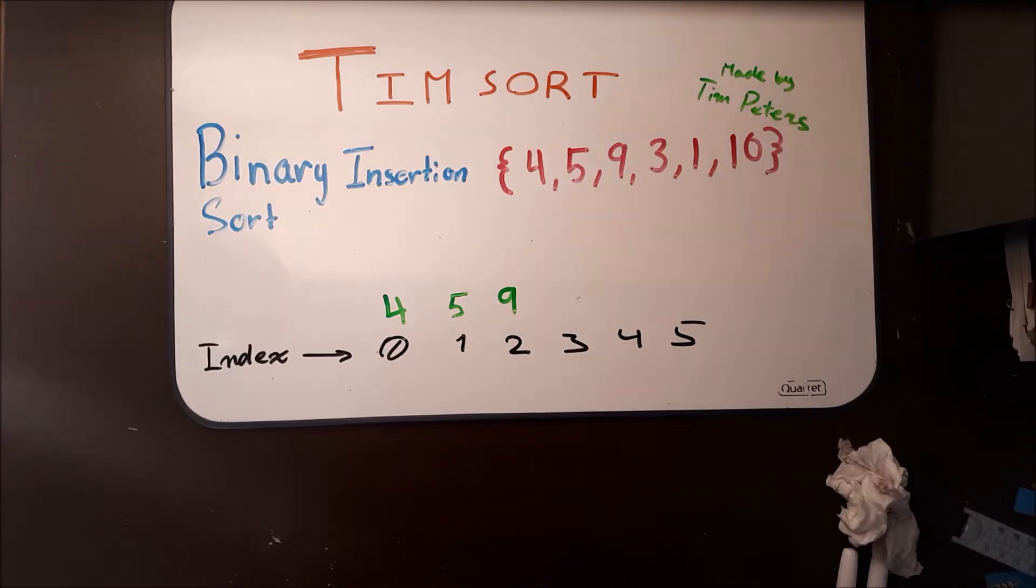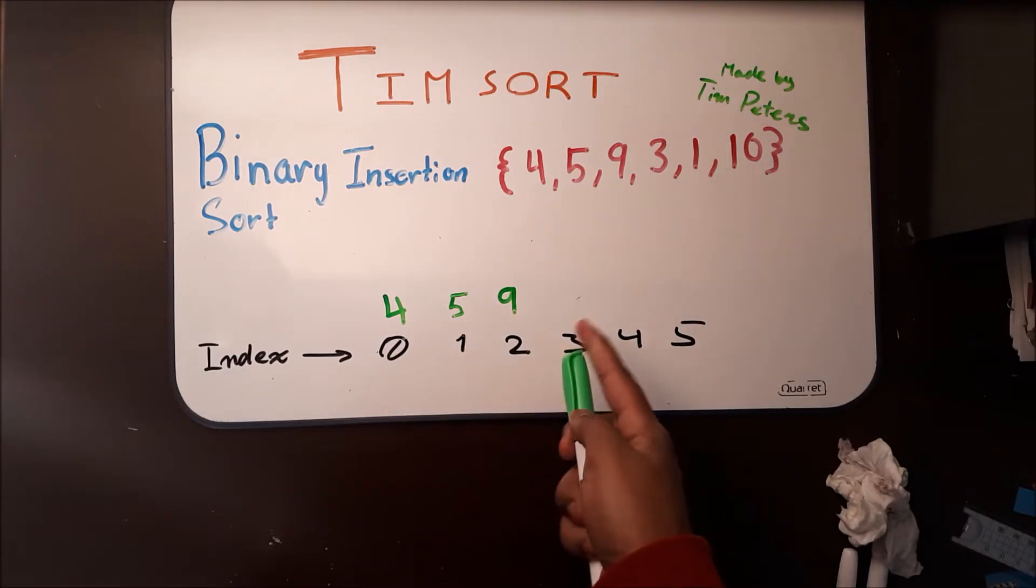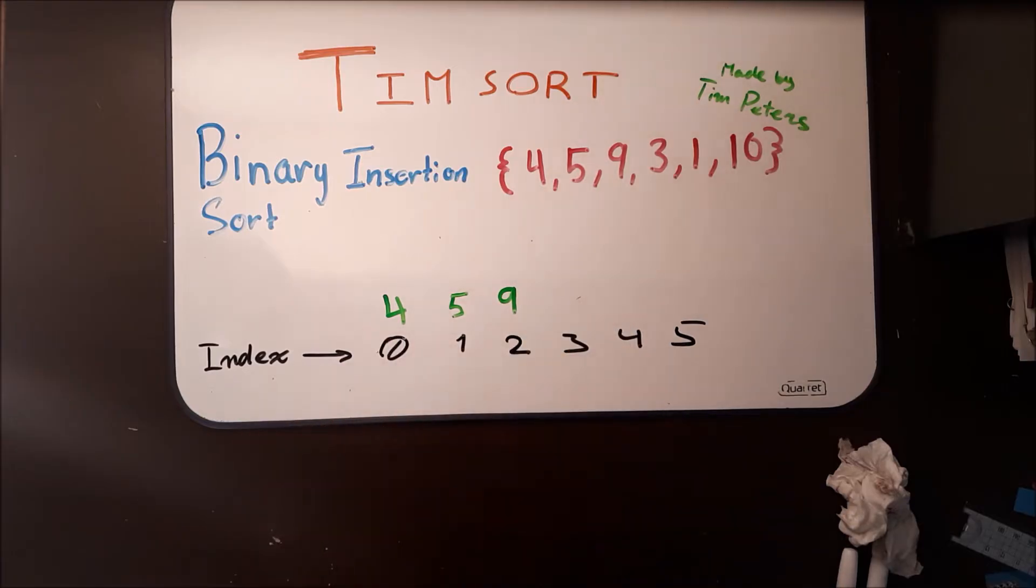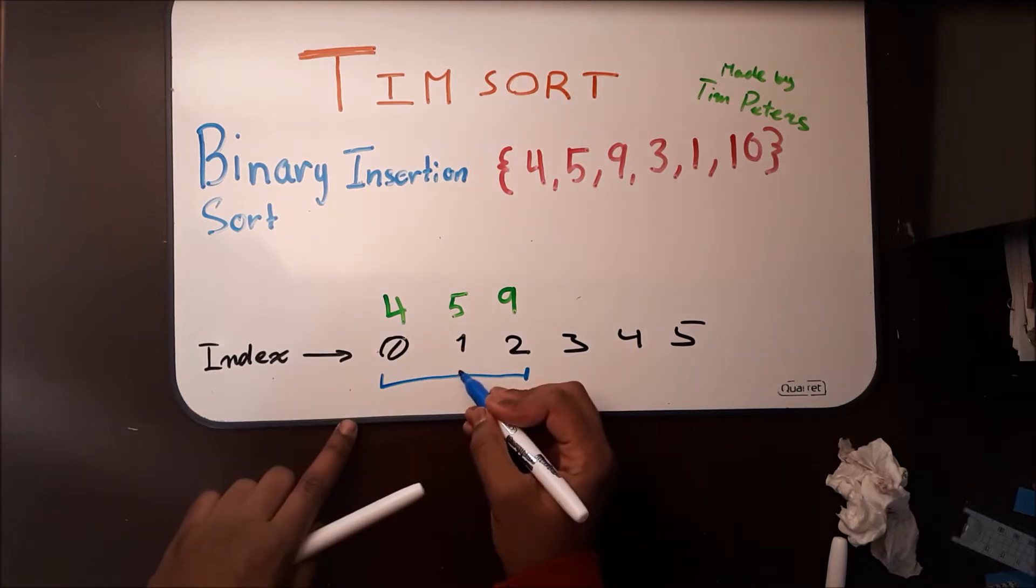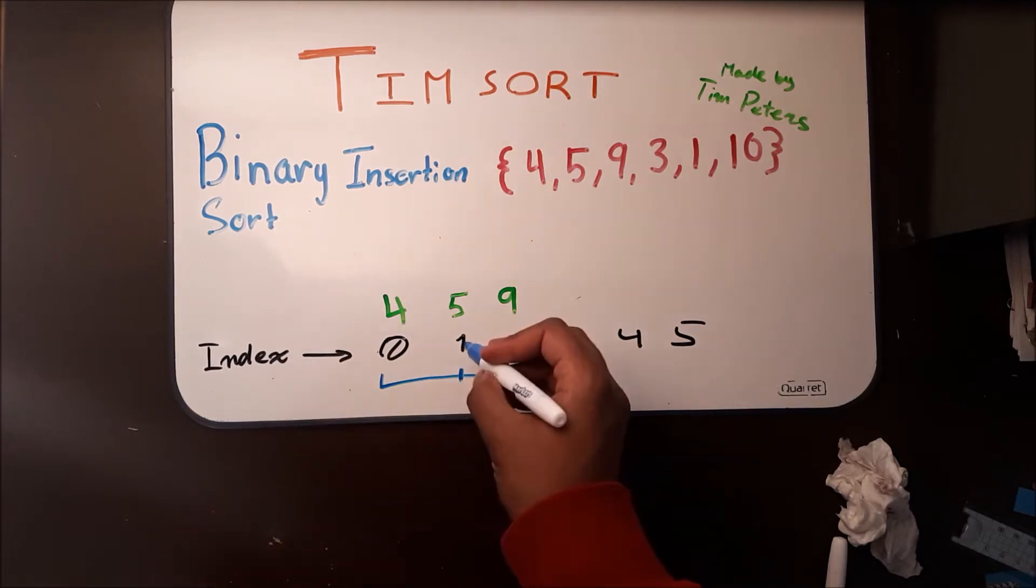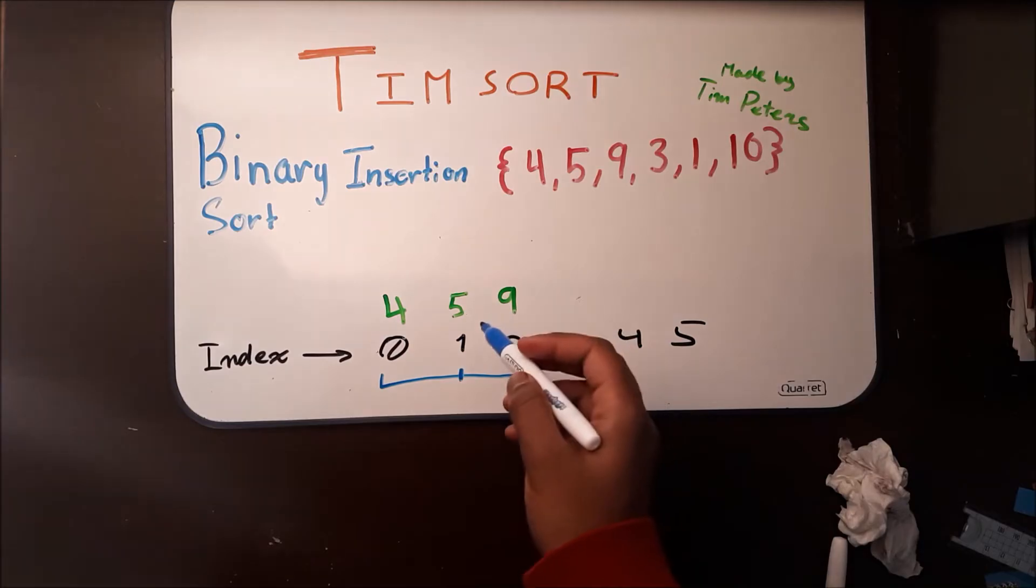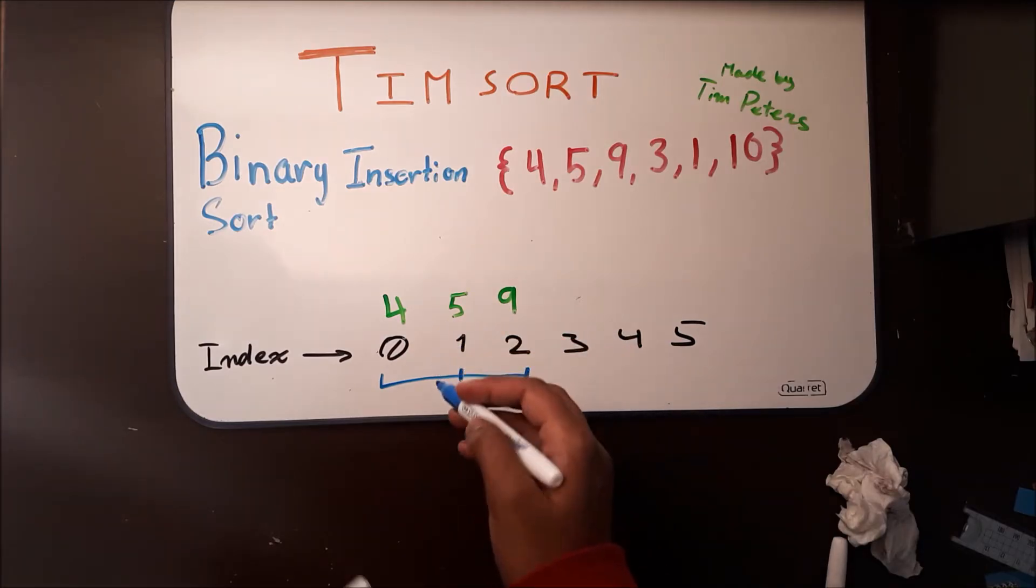However, now we're at 3, and we see that 3 belongs to the left of 9. So now we're going to have to do a binary search. The middle of this would be 1. So we're going to look at index 1, and we're going to see does 3 belong on the right side or left side? Left side.